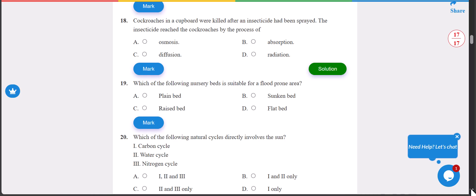Number 18: cockroaches in the cupboard were killed after an insecticide had been sprayed. The insecticide reached the cockroaches by the process of diffusion. As you can see it was sprayed at one corner then gradually it spread to all the hiding places of the cockroaches in the cupboard and they all died. The answer is C.